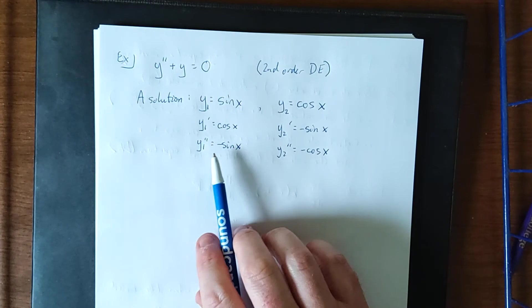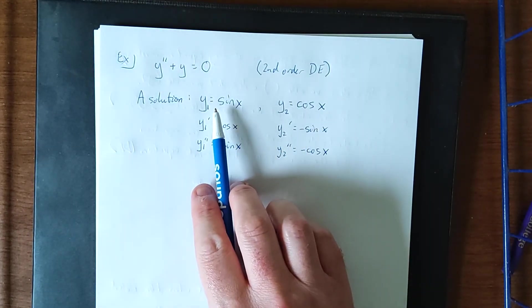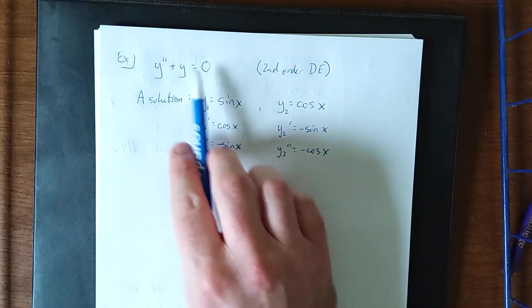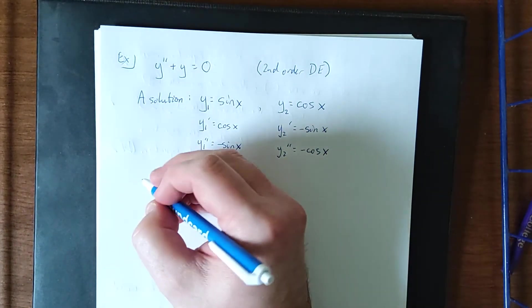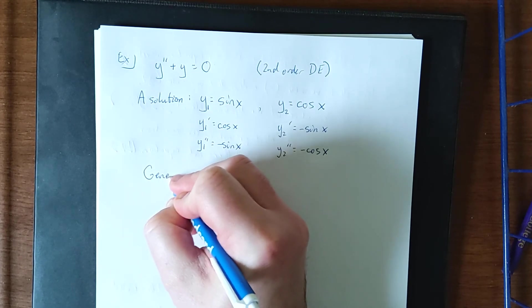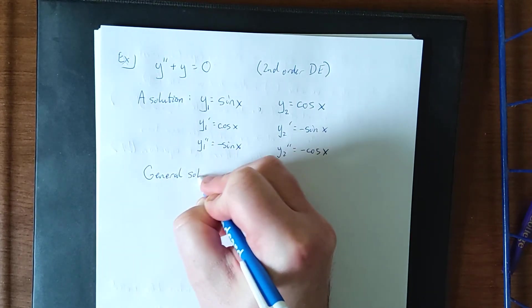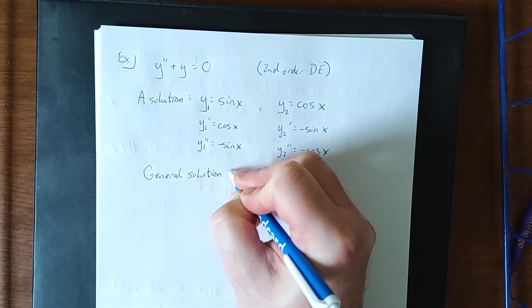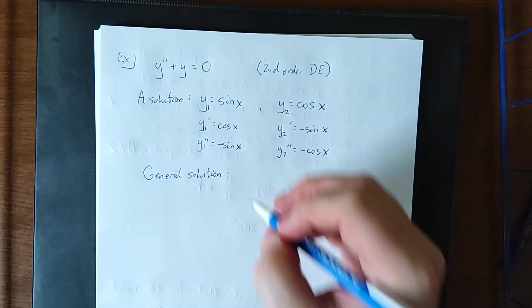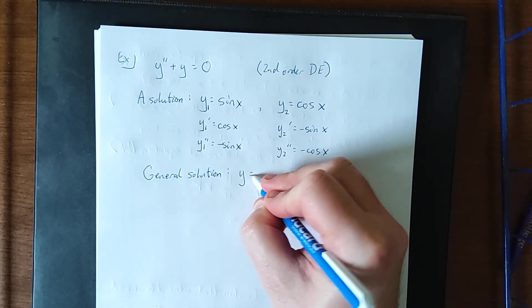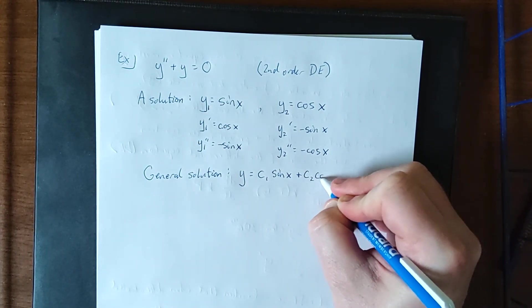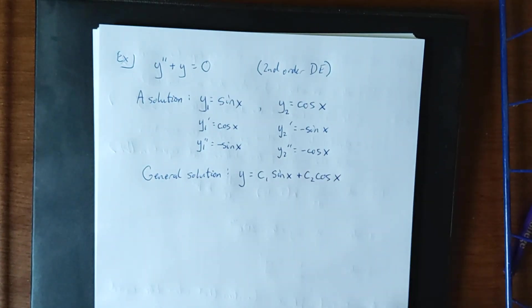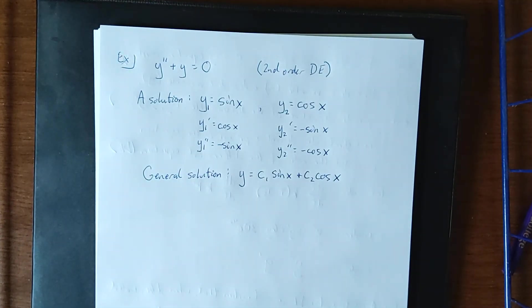Now it should also be pointed out that these two original sines and cosines could potentially have a coefficient and it would still satisfy the original equation. Now with that in mind, the general solution of this, and this is where linear algebra is going to come in really handy when you take the differential equations course. The general solution is known as a linear combination of these two functions. That is to say, multiply a constant times each of these and you'll wind up with the general solution.